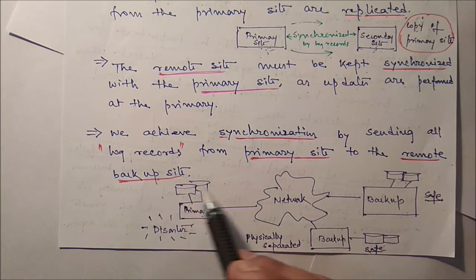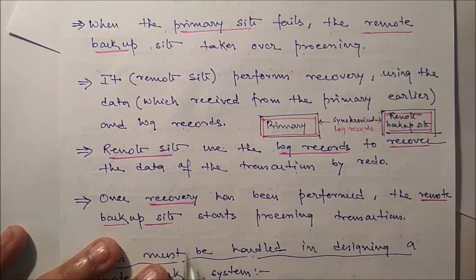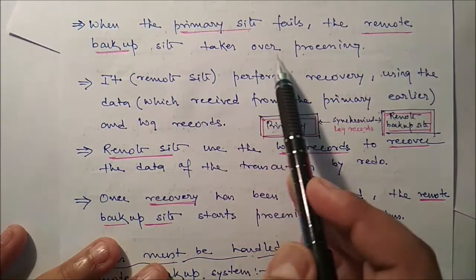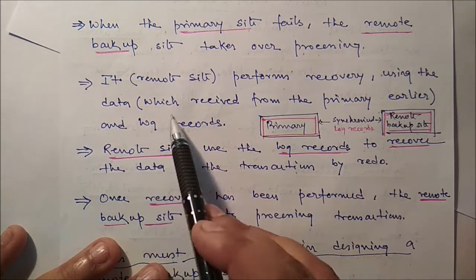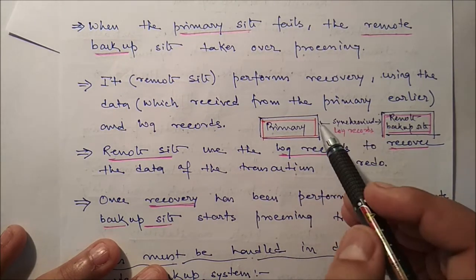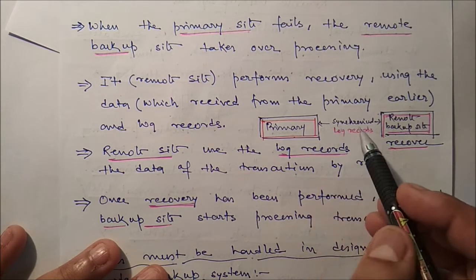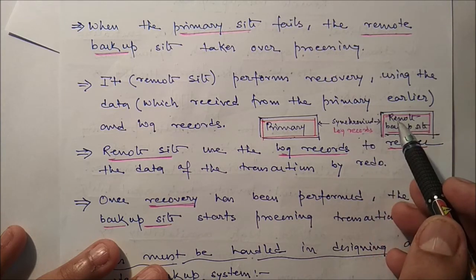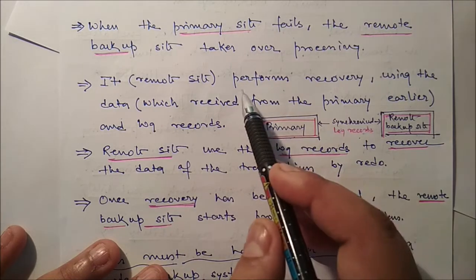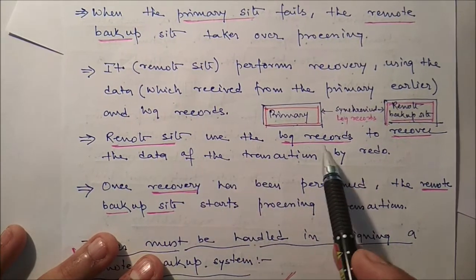If any disaster occurs at the primary site, we can use the backup site as a primary site, because all the replicated values are present in the backup site and they are connected through networks. When the primary site fails, the remote backup site takes over processing — it performs recovery using the data received from the primary earlier and the log records. We replicate the content of the primary in the secondary site and send log records along with the data. If the primary site fails, with the help of log records, the remote backup can perform recovery using the replicated data and the logs.